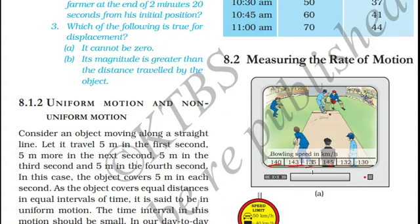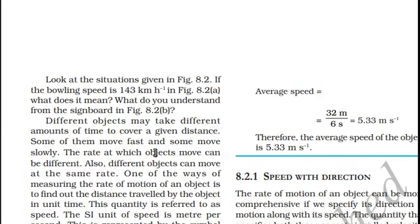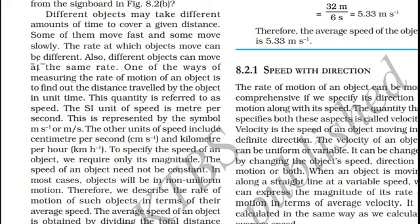The second ball is 143 km per hour, and the third ball is 135 km per hour. These numbers with units like 140 km per hour are the rate at which the object moves. Different objects may take different amounts of time to cover a distance — some move fast, some move slowly. A powerful automobile like a car can move very fast, whereas animals such as tortoises move very slowly.